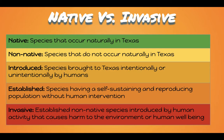A native species is one that occurs naturally in Texas. Non-native are species that do not occur naturally in Texas. Introduced means species that are brought to Texas intentionally or unintentionally by humans. Established are species having a self-sustaining and reproducing population without human intervention. Invasive are established non-native species introduced by human activity that causes harm to the environment or well-being.